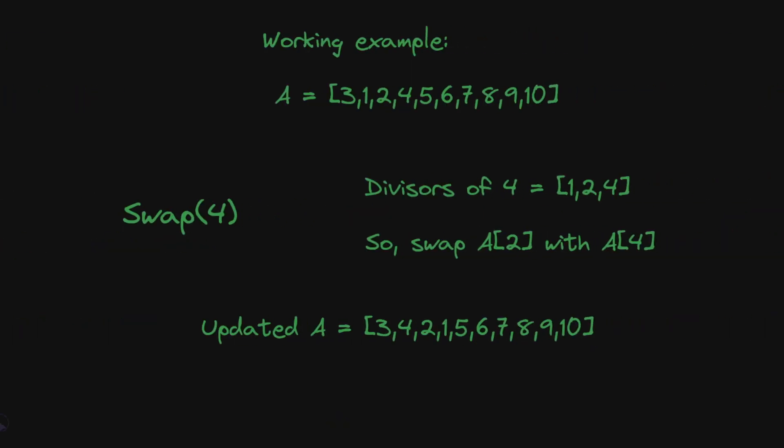If we call swap 4, the divisors of 4 are 1, 2, 4. The largest divisor which is not equal to 4 would be 2. So we swap a2 and a4. Our updated array becomes 3, 4, 2, 1, 5, 6, 7, 8, 9, 10. If you notice, now 1 has moved from index 2 to index 4.